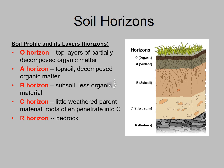Below the subsoil is the C horizon, sometimes called the substratum. It's getting into the parent material — the rock that underlies all of this. It's a little bit weathered, so you get rocks and broken-up pieces of rocks, with some roots penetrating down there for deep-rooted trees. And below the C horizon is the R horizon — the bedrock, the solid rock that underlies all these other layers. Around here a lot of it is sandstone and shale.